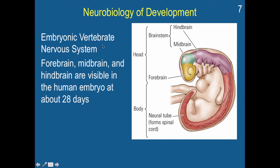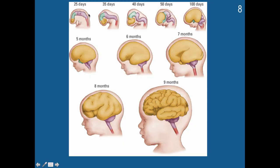Here you can see an embryonic vertebrate nervous system. The forebrain, midbrain, and hindbrain are all visible in the human embryo at about 28 days. This here is the neural tube, which is eventually going to form the spinal cord, and this is the early beginning of the brain. Walking through the various stages of brain development in the embryo — at 25 days you see the very early stages of the brain. The cortex is really small, but as it continues to develop the cortex gets a little bit larger, and you start to have folds forming that will become the cerebellum.